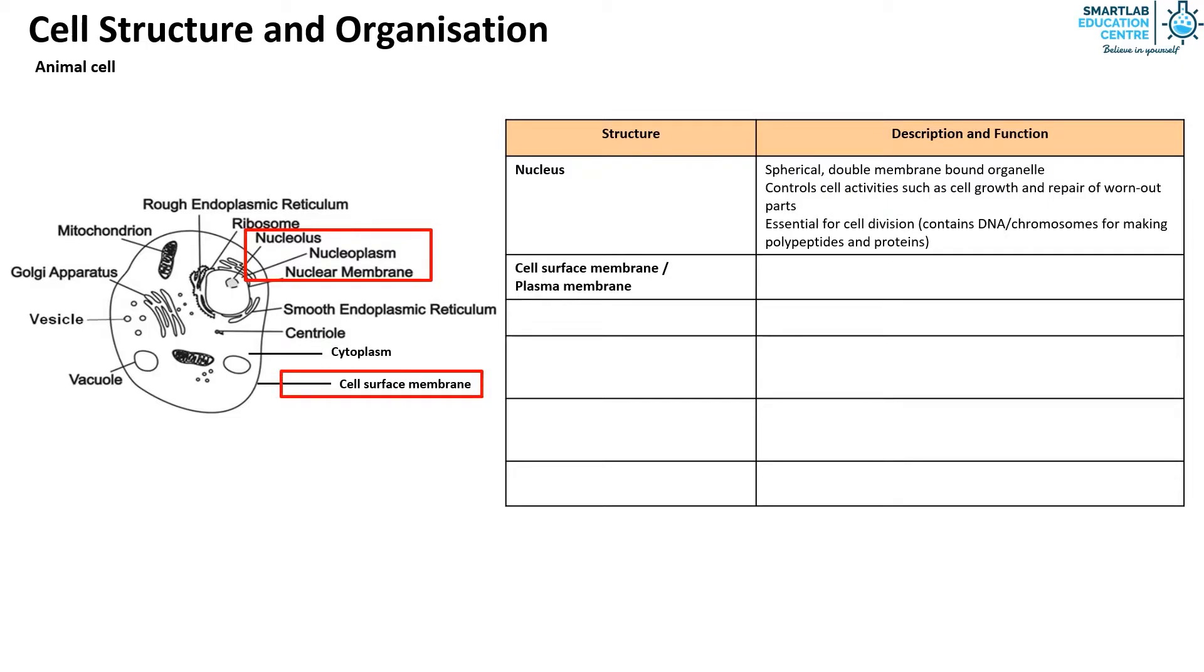The cell surface membrane or plasma membrane is a partially permeable, phospholipid bilayer. It controls the movement of substances in and out of the cell.